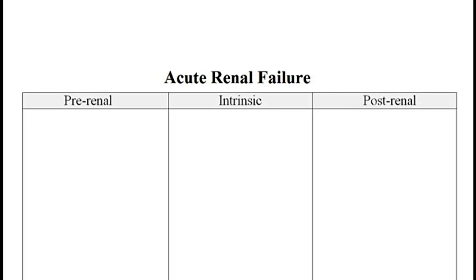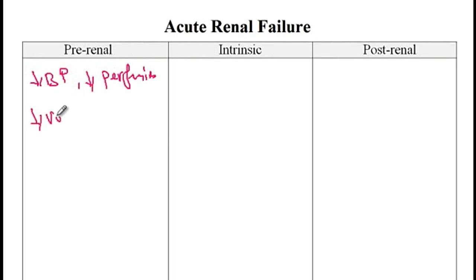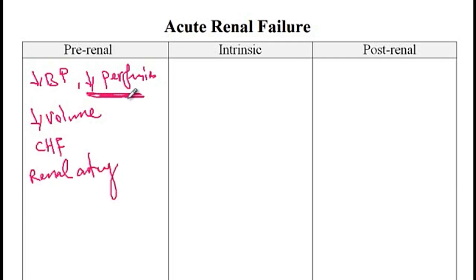Pre-renal failure results from either low blood pressure or low renal perfusion. Conditions that cause it include hypovolemia from dehydration, blood loss, vomiting, or excess diuretic use. Congestive heart failure can cause decreased kidney perfusion. Renal artery stenosis is another common cause, and peripheral vasodilation from too much antihypertensive medications or from sepsis can also cause decreased renal perfusion and pre-renal failure.